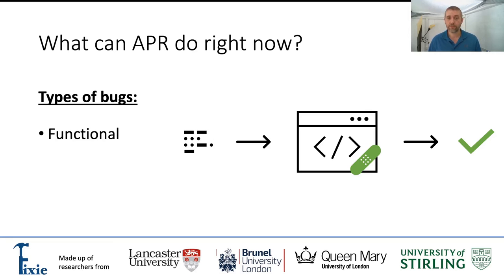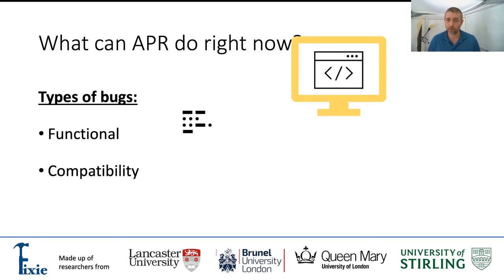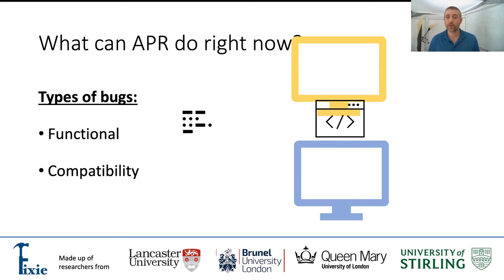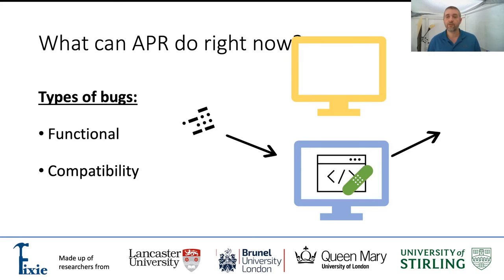Compatibility issues are another group of bugs that APR can deal with to some extent, where software doesn't behave as it should when ported to other operating systems or hardware. APR can use mutations or refactoring techniques to find simple patches to fix these incompatibilities.